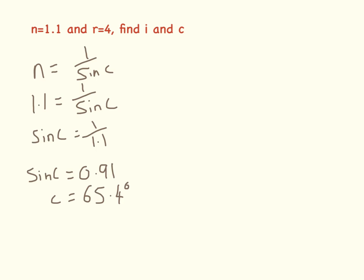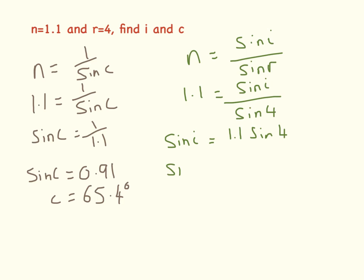Inverse sine of that equals 65.4 degrees. So now to find I, N equals sine I over sine R. 1.1 equals sine I over sine 4. So I'm going to rearrange it. So I'm going to do sine 4 times 1.1 equals 0.077.